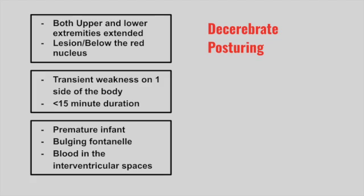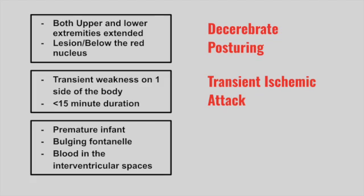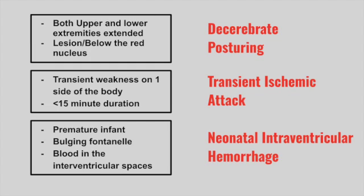Next is a patient with transient weakness on one side of the body lasting less than 15 minutes. This is a transient ischemic attack — very acute with no lasting symptoms. Next is a baby born prematurely with a bulging fontanelle and blood in the intraventricular space seen on ultrasound. This is neonatal intraventricular hemorrhage.